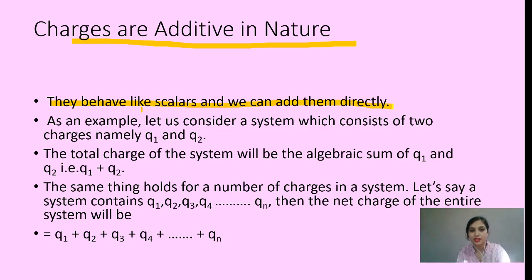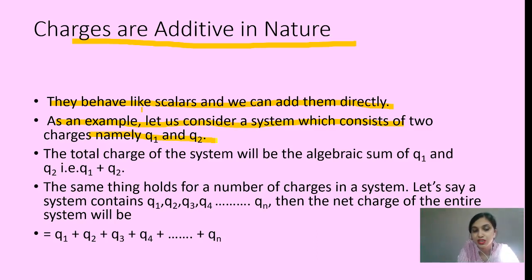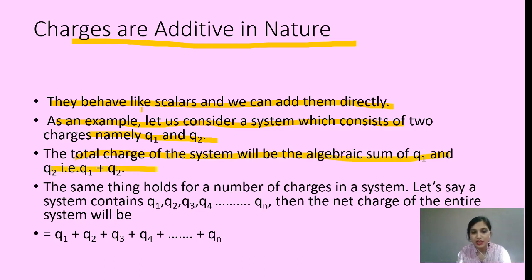Consider a system which consists of two charges, namely Q1 and Q2. The total charge of the system will be the algebraic sum of Q1 and Q2, that is Q1 plus Q2. If we take the signs into account — if one is positive and one is negative, we include the sign. So the net charge will be the sum of the total charges including their signs.